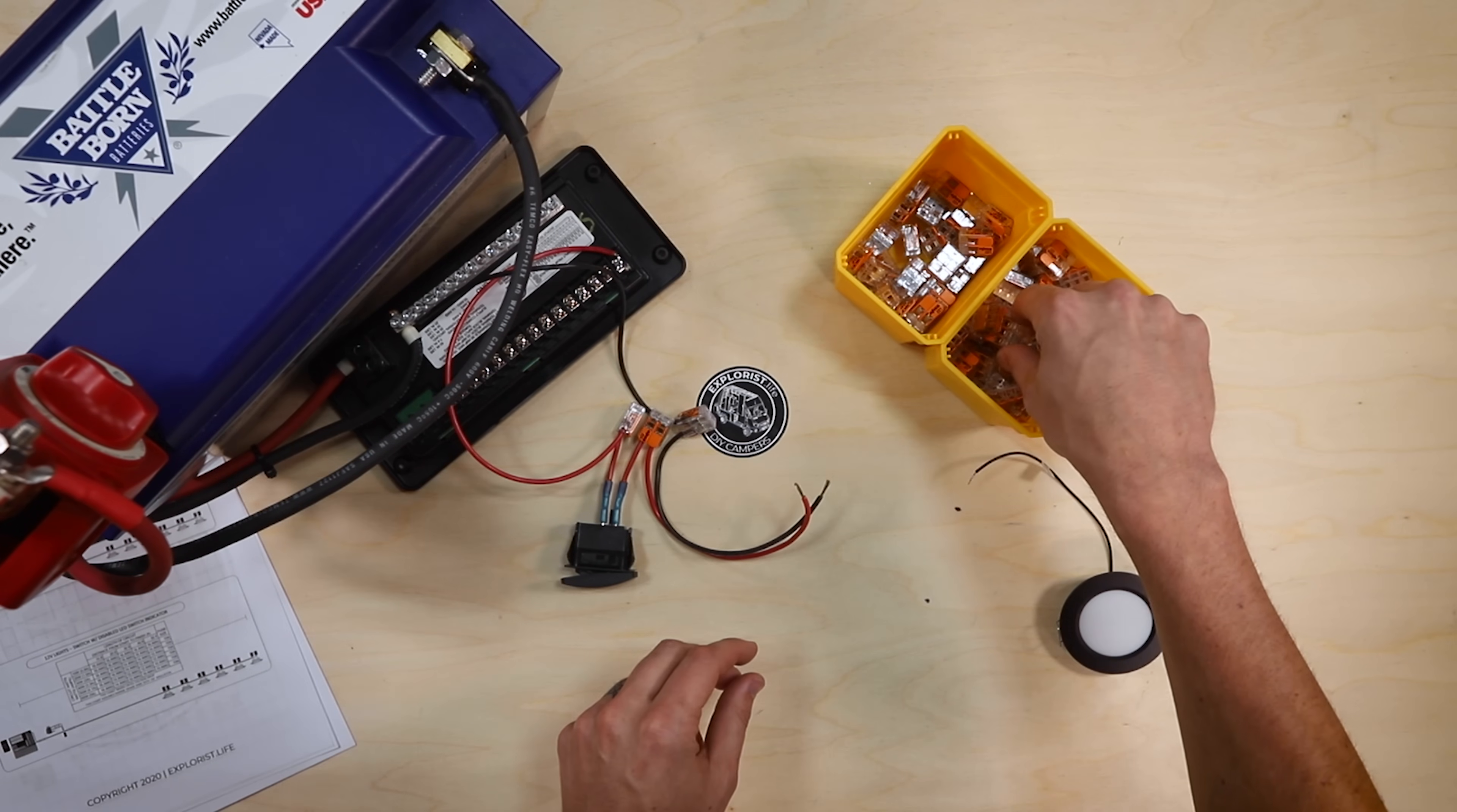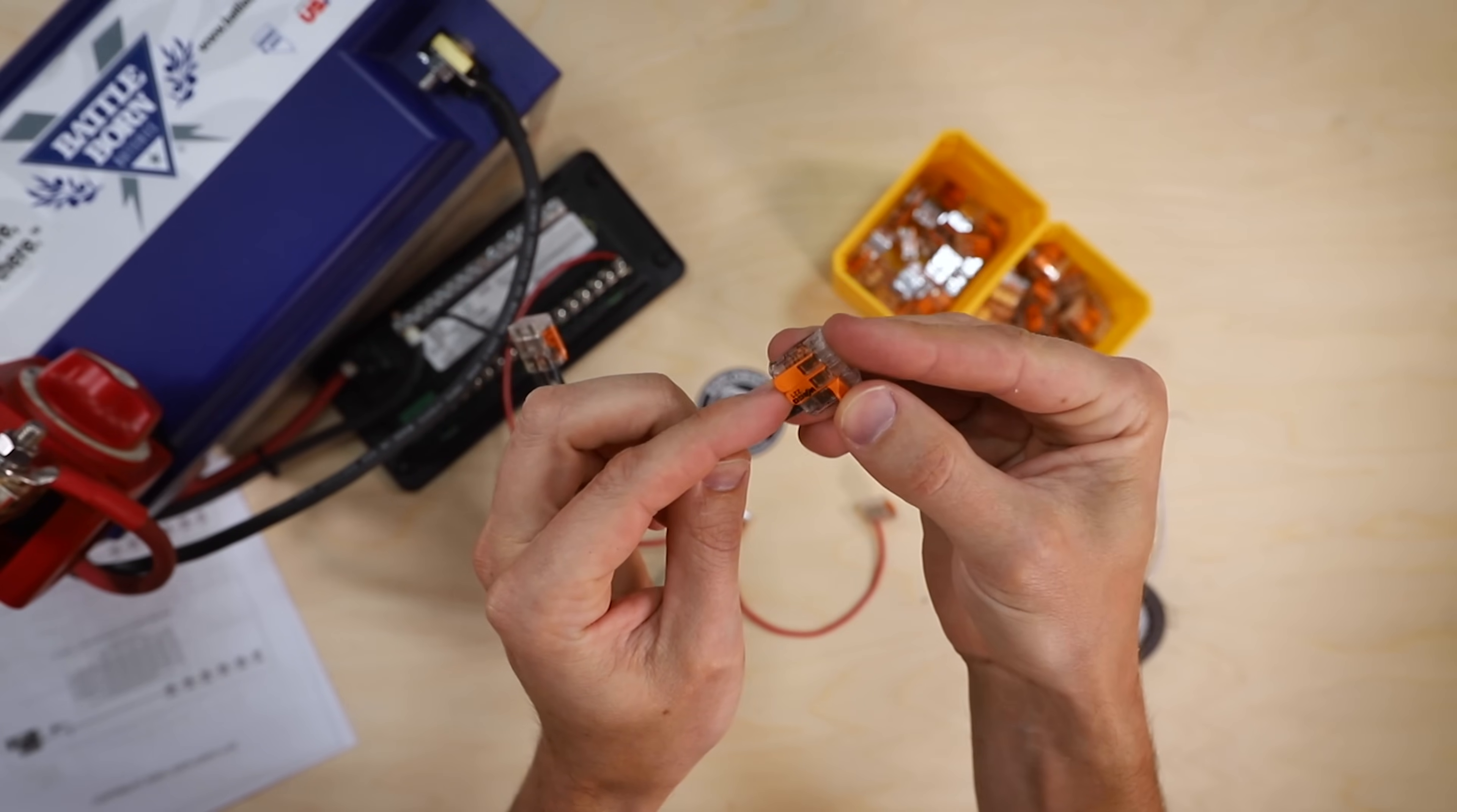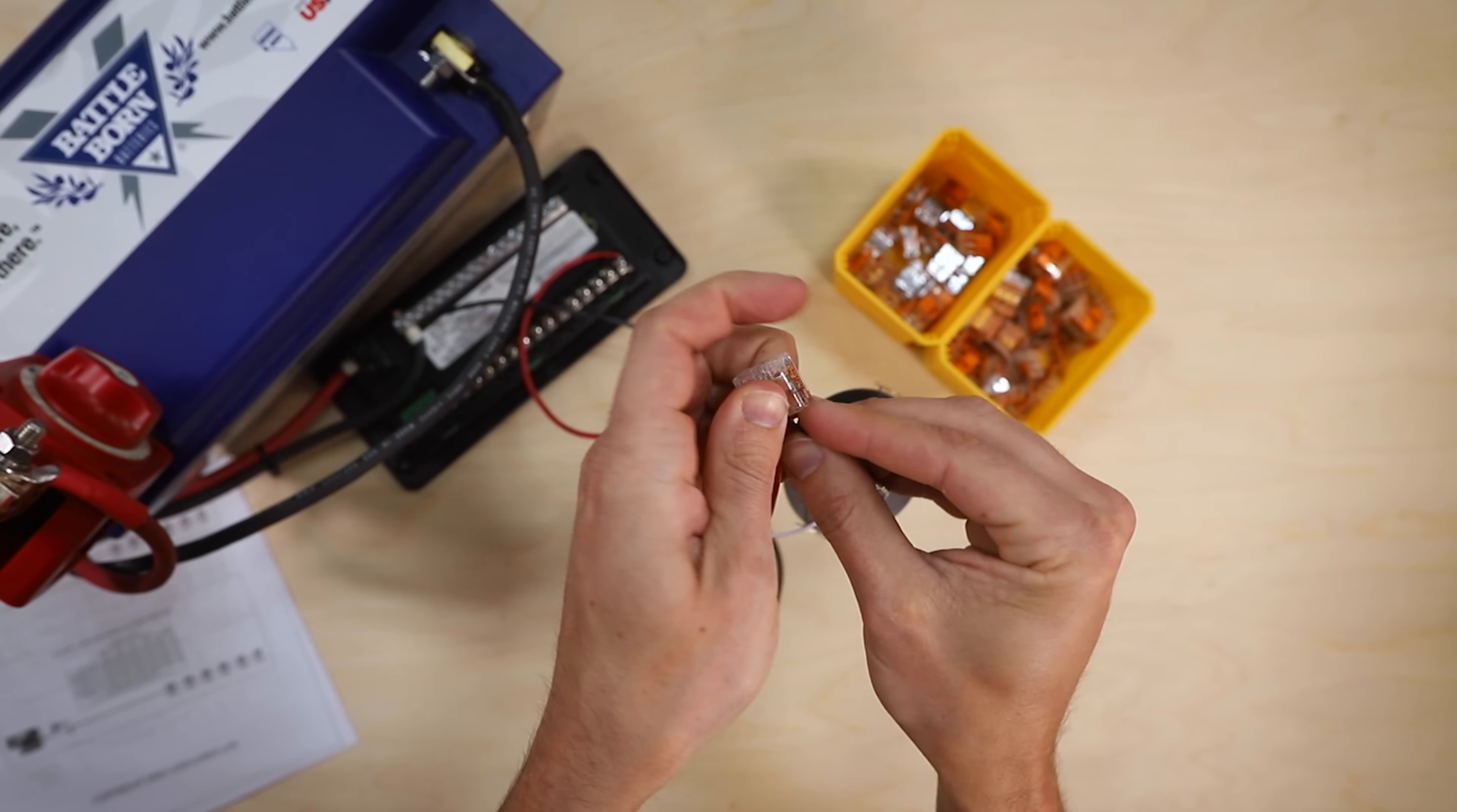Now I'm going to grab two three conductor lever nuts here. The positive on one side and negative in the next lever nut. And then we can put the positive wire from the light, remembering that the positive is black on this particular light.